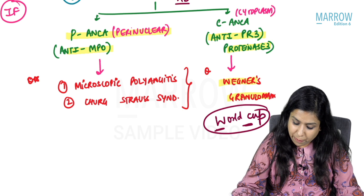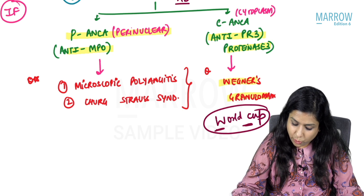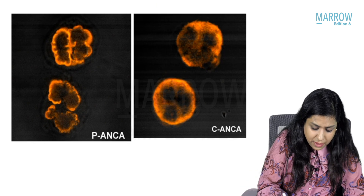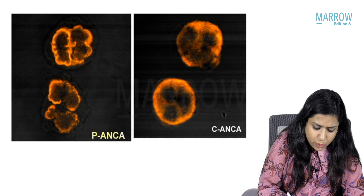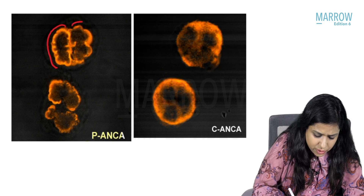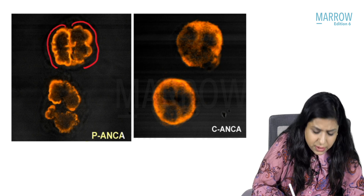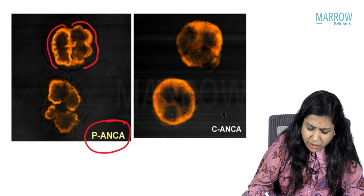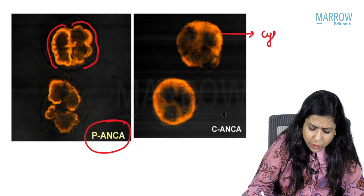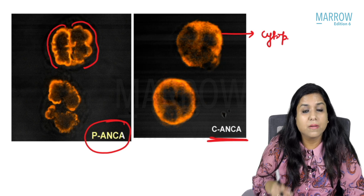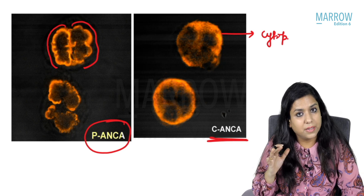Looking at the ANCA staining image: you can see the perinuclear region being stained — that is PANCA — and here you can see diffuse cytoplasmic staining, so that is CANCA. These are the two types of ANCAs, and we see them by immunofluorescence testing.